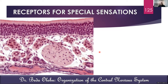Those are general sensory receptors. Now let's look at special sensory receptors — receptors for special sensations. The five special sensations are vision, hearing, smell, taste, and vestibular function. A key feature of special sensations is that they are limited to the head region and conveyed exclusively by cranial nerves.